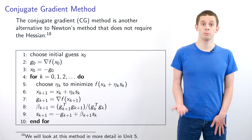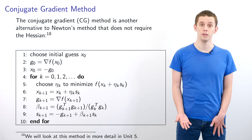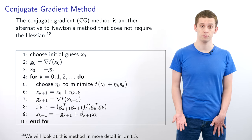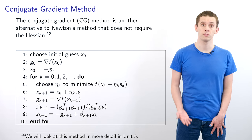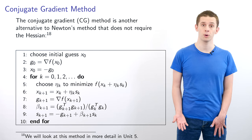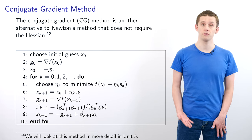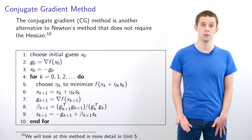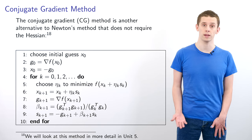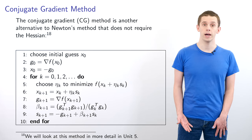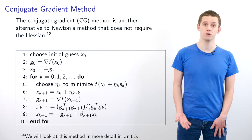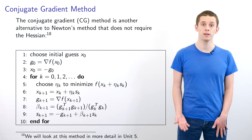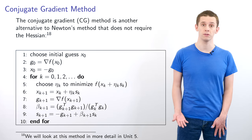It's also worth briefly mentioning the conjugate gradient algorithm for nonlinear optimization, another alternative to Newton's method that doesn't require the Hessian. The conjugate gradient method doesn't even require an approximation to the Hessian, meaning we don't need to track an n×n matrix — which can become expensive when n is large. A full discussion of this algorithm will be deferred until unit 5, when the conjugate gradient method comes up in the Krylov method section.